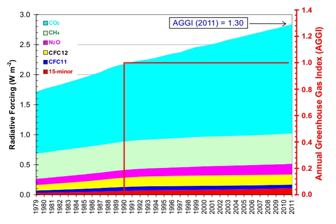Aside from water vapor, which has a residence time of about nine days, major greenhouse gases are well mixed and take many years to leave the atmosphere. Although it is not easy to know with precision how long it takes greenhouse gases to leave the atmosphere, there are estimates for the principal greenhouse gases.